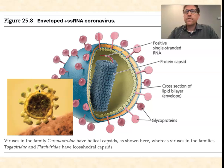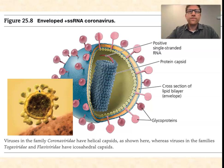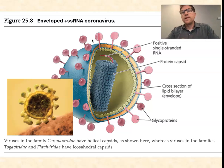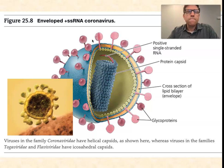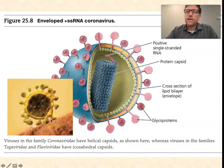Rhinoviruses are the most common cause of colds; coronaviruses are the second most common. Typical of enveloped viruses, they get into cells by way of membrane fusion. The S protein — the spike protein — actually has two subunits: an S1 and an S2 subunit. The S1 subunit binds to a protein on the surface of human epithelial cells called ACE2. ACE2 is the receptor for the S1 glycoprotein spike of coronaviruses, and that's the initial attachment that takes place.